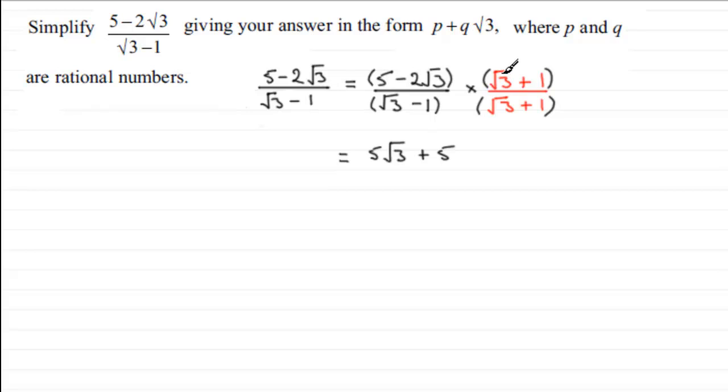And now we've got minus 2 root 3 times the root 3. Well, root 3 times root 3 is, in fact, 3. You could think of it as root 3 times root 3 is the root of 9, which is 3. So, minus 2 times 3 is minus 6. And then you've got minus 2 root 3 times the plus 1. So, that's going to be minus 2 root 3. So, that's the top line done.